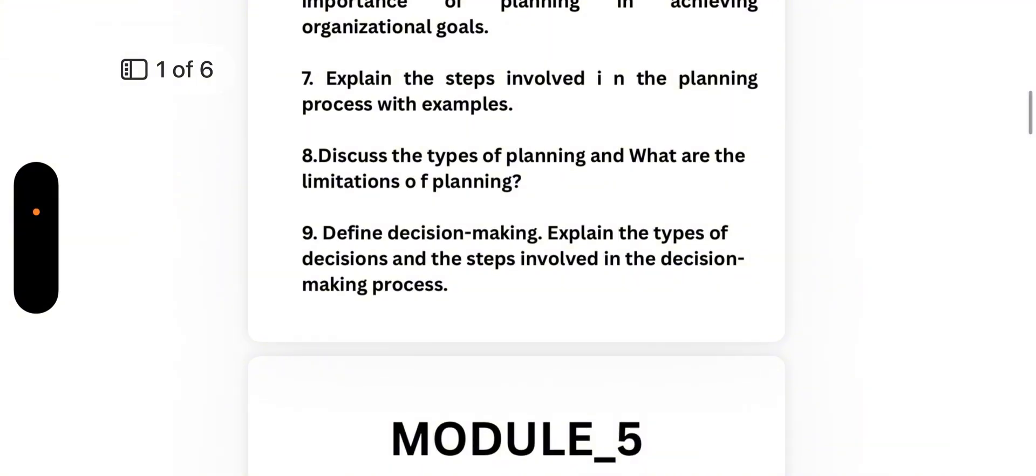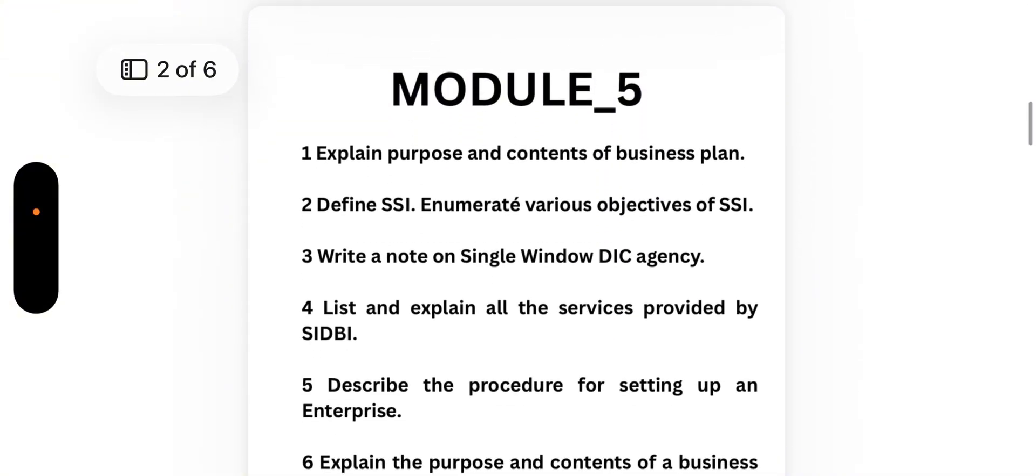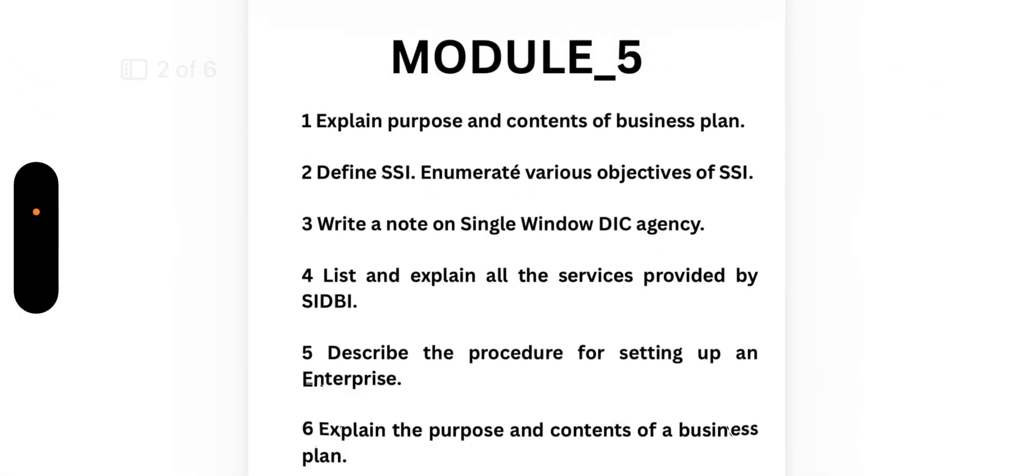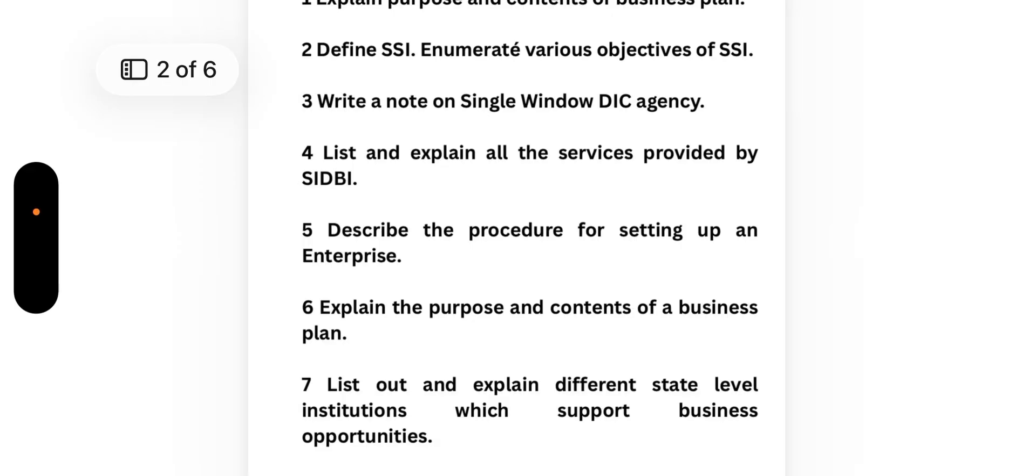Now discuss Module 5, which is again a passing module. Explain purpose and contents of business plan. Define small scale industry SSI, enumerate various objectives of SSI. Write a note on single window DIC agency. List and explain all the services provided by SIDBI and describe the procedure for setting up an enterprise.